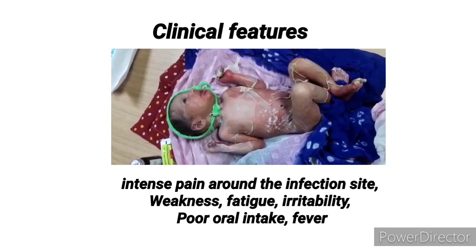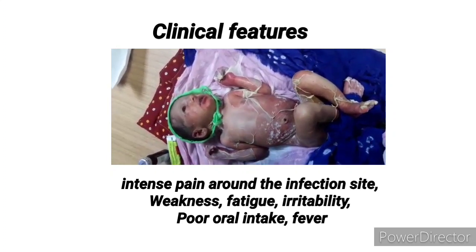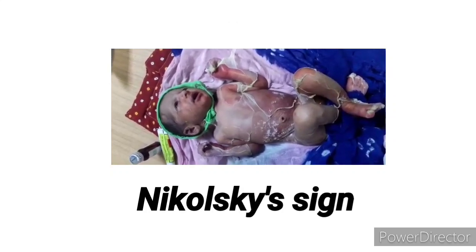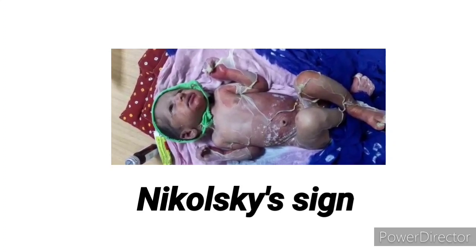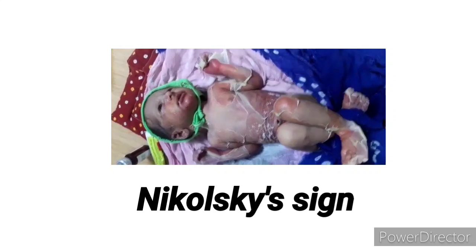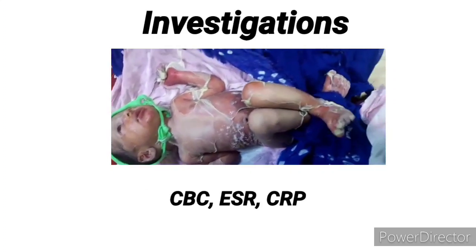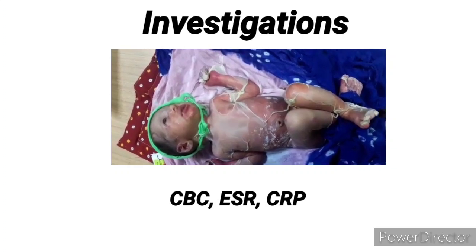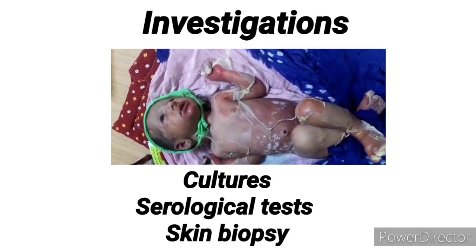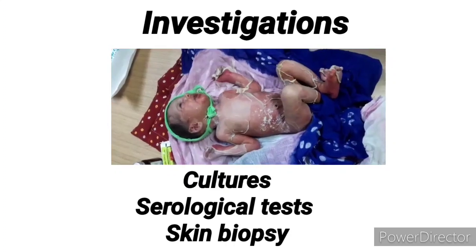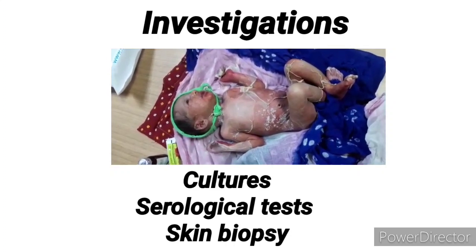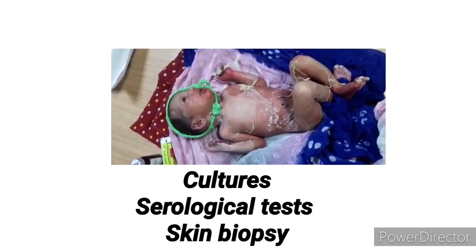The skin takes on a burned or scalded appearance, followed by erythematous cellulitis. The patient will also have fever, refusal to feed, irritability, malaise, weakness, and intense pain. For diagnosis, we can perform the Nikolski sign, where the skin peels off with gentle touch, leaving a wet red area that appears as burnt skin. For investigation, we perform sepsis screening, complete blood count, ESR, CRP, and send cultures of blood, urine, skin, umbilicus, nose, and conjunctiva.